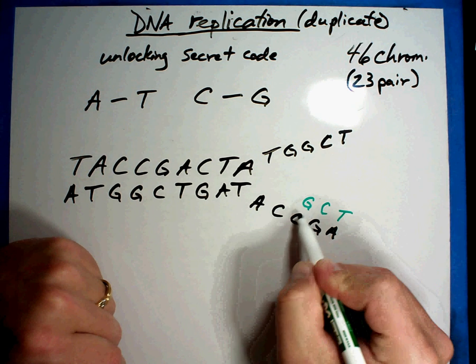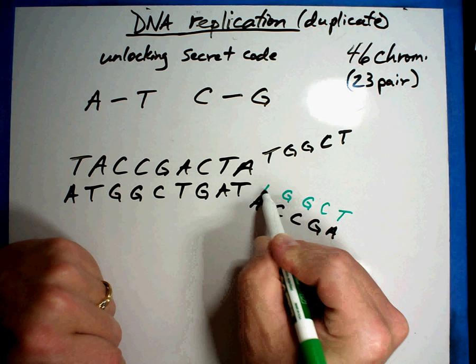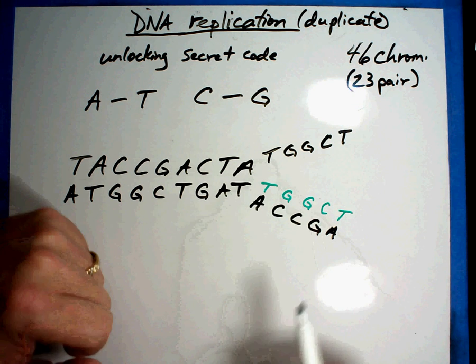And so what happens is when you get to a point where it's open like this, automatically they start plugging in where they go. Ts go with As, C, G, G, C, G, C, T, A. And so they just find a place to plug on.